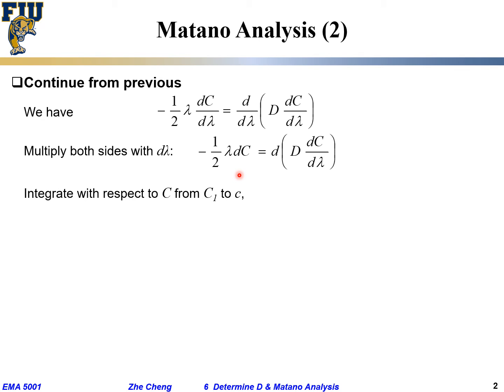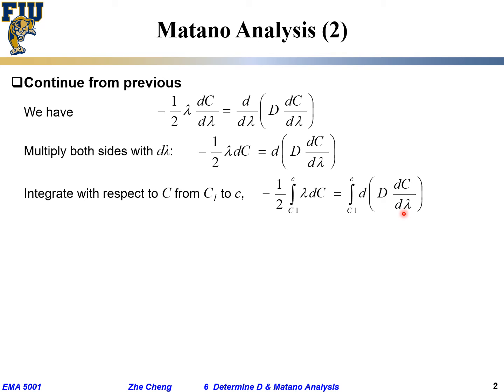Then we do integration on the left and right sides — integration with respect to concentration from c1 to c. What is c1? c1 is the initial concentration for one side, and small c is any arbitrary concentration in between. So we integrate both sides over that fixed range from c1 to small c.